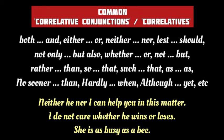Look at the following sentences. In the first example, the Correlative Conjunction 'neither/nor' is joining the two subjects, 'he' and 'I.' In the sentence 'I do not care whether he wins or loses,' the Correlative Conjunction 'whether/or' joins the two verbs 'wins' and 'loses.' And in the last example, the Correlative Conjunction 'as/as' connects the adjective 'busy' with the noun 'a bee.'